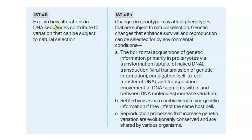Explain how alterations in DNA sequences contribute to the variation that can be subject to natural selection. One of the big themes is that life changes through time. Changes in genotype may affect phenotypes subject to natural selection — survival of the fittest. If you have an advantage, you have a more likely chance to survive and pass those successful genes on. Genetic changes that enhance survival and reproduction can be selected for by environmental conditions. Horizontal acquisition, conjugation, and transposition increase variation in prokaryotes, and related viruses can also recombine or combine genetic information. Processes that increase genetic variation are evolutionarily conserved, meaning we keep them because they are successful.